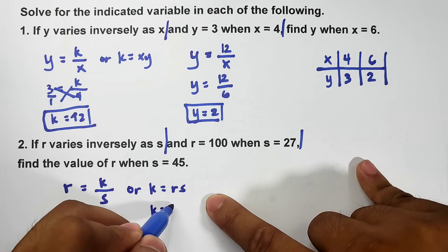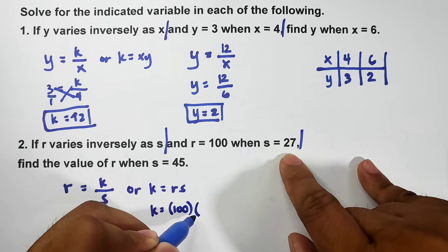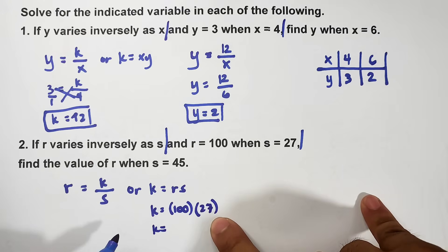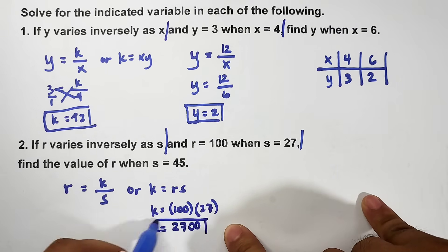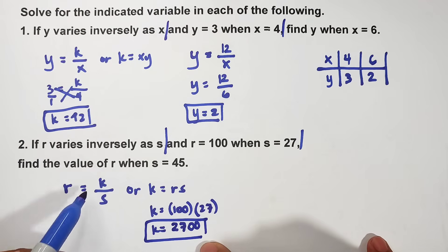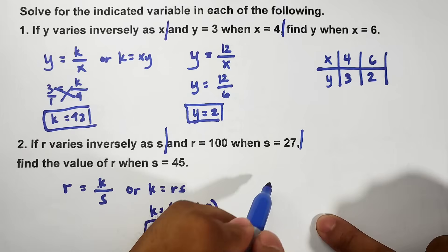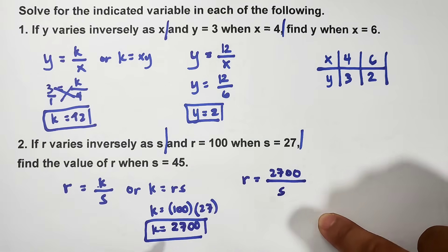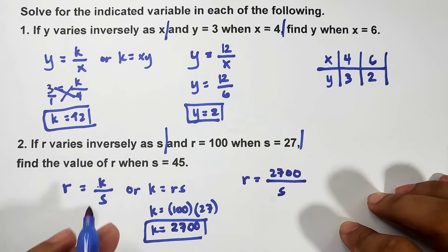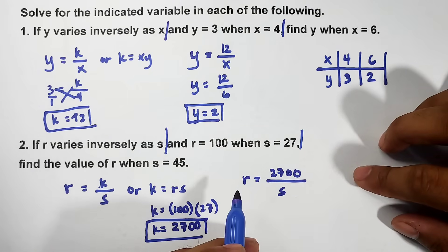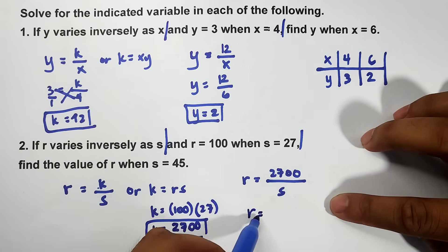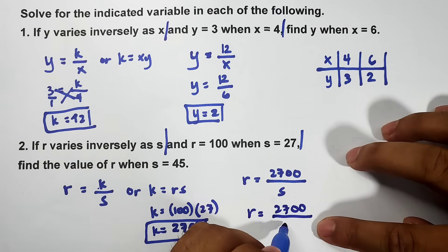Let's use this. Find the constant. R equals 100, so this is 100. Your s is 27, quite large. So your constant here is 100 times 27 which is 2,700. Now let's find the equation. Go back here and replace variable k by 2,700: r equals 2,700 over s. After doing this, we can go to the main problem: find the value of r when s equals 45.